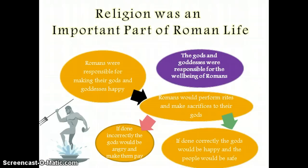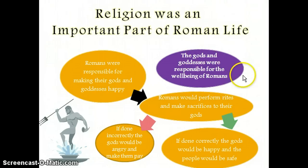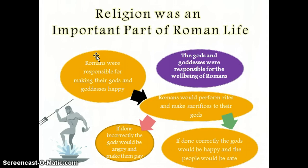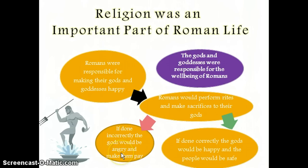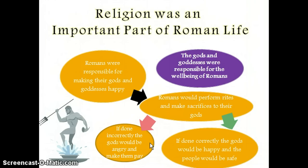How did religion work in Rome? The Romans believed that the gods and goddesses were responsible for their well-being — the gods were going to take care of the Romans. In turn, the Romans were responsible for making the gods and goddesses happy by performing rites and sacrifices. If they did those rites and sacrifices correctly, the gods would be happy and everything would be fine. If they did them incorrectly, the gods would be unhappy and would make them pay.